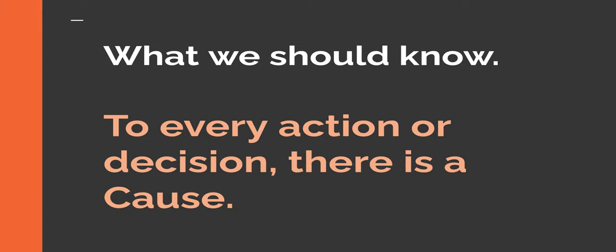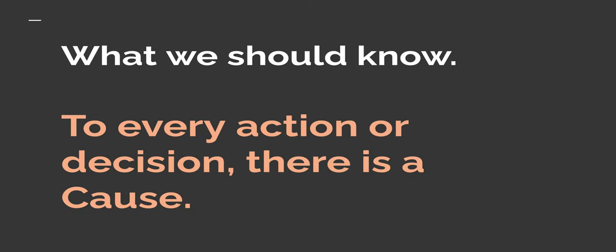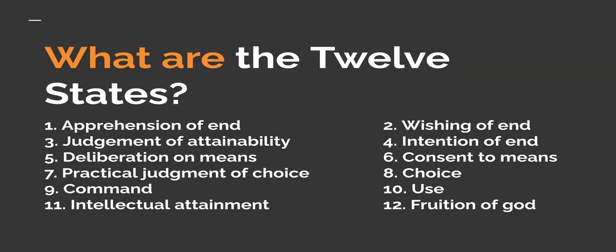We should know that to every action or decision there is a cause. There's a lot of cause and effect. Before the effect — which is the action, decision, goal — there is a cause. The cause is us sitting back and thinking: should we really do this? Every action has a cause and then an effect. The effect is the action and the decisions, and we are going to take the cause to be the 12 acts — the 12 human acts.